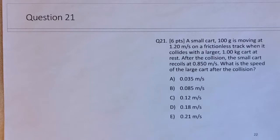A small car, 100 grams, moving at 1.2 meters per second on a frictionless track collides with a larger one kilogram car at rest. After collision, the small car recoils, so recoil means to move in the opposite direction to its initial direction, at 0.85, and we're trying to figure out the speed of the large car after the collision.